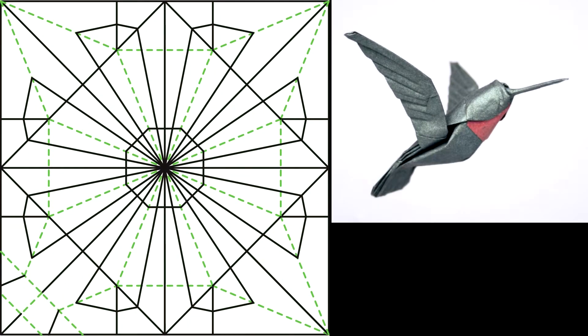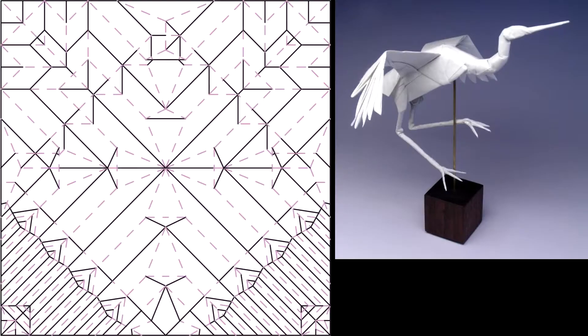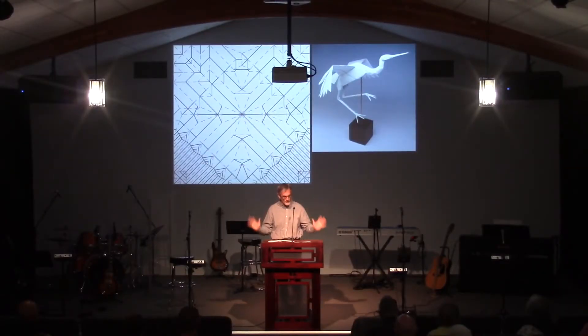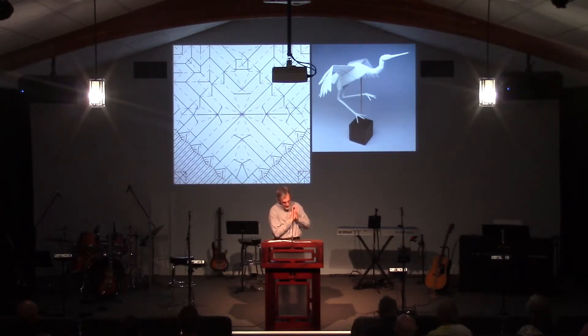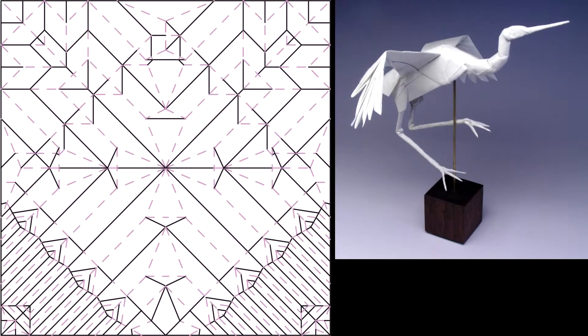Unless you are an origami expert, you would have no idea what all of those fold and crease lines on the paper are going to become in the hands of the artist. Our lives are like origami paper. Our lives are filled with folds and creases of all kinds, and it's hard to know what we're becoming as we are being bent and pressed and pushed and folded and creased and smushed. But the artist at work in our lives knows exactly what he's doing, and when he's finished, we'll be astounded by the beauty that he's created in us.